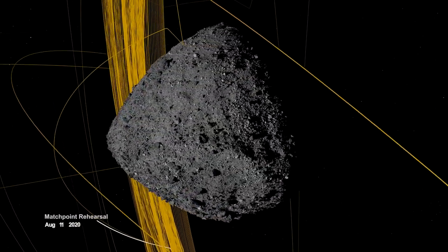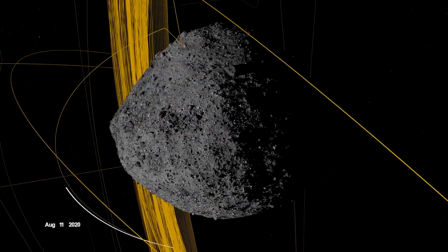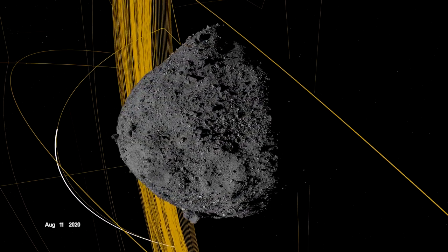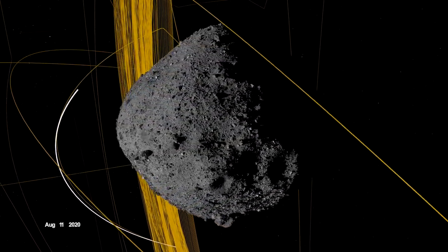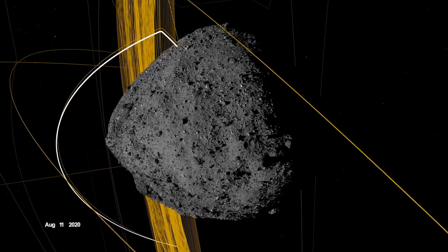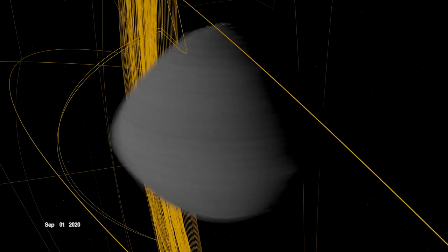On August 11th, OSIRIS-REx departed its home orbit and made a four-hour traverse to Bennu's northern hemisphere, retracing its earlier path. After performing the checkpoint engine burn to begin its descent, it made a second engine burn called Matchpoint to match Bennu's rotation before backing away at an altitude of approximately 40 meters.